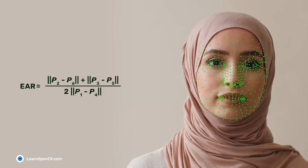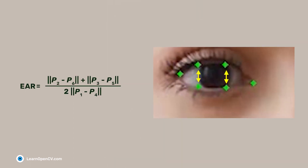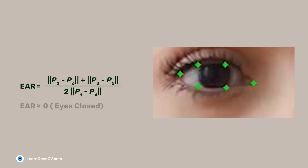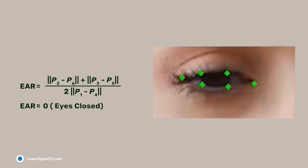The EAR value is calculated between the height and the width of the eye. We subtract the upper and lower points on the eyelid and divide them by the difference between the leftmost and the rightmost points on the eye. This formula returns a single scalar quantity that reflects the level of eye opening. The EAR value will be close to zero if the eye is closed.